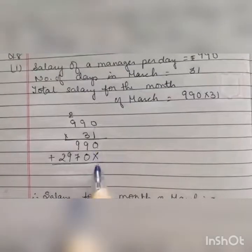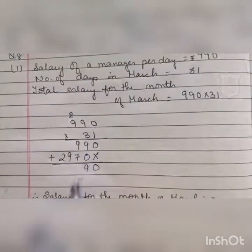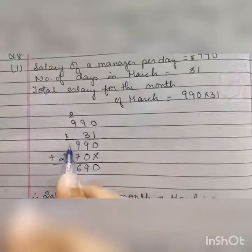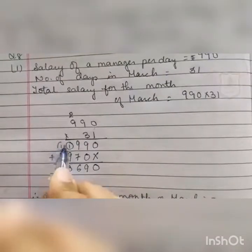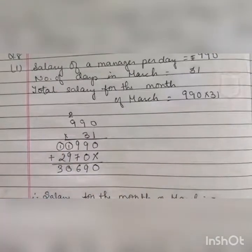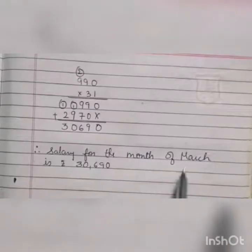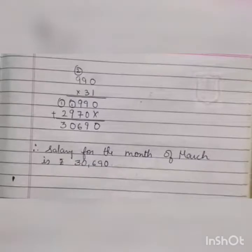Now we will add both results. 0 plus 0 is 0, 9 plus 0 is 9, 9 plus 7 is 16 — write 6, carry over 1. 9 plus 1 is 10 — write 0, carry 1. 2 plus 1 is 3. Therefore, the salary for the month of March is rupees 30,690.